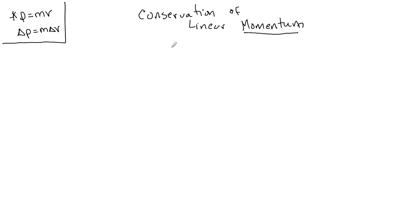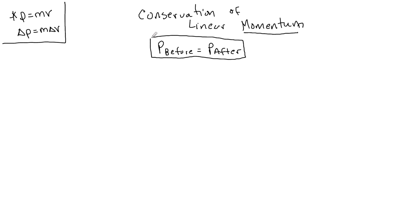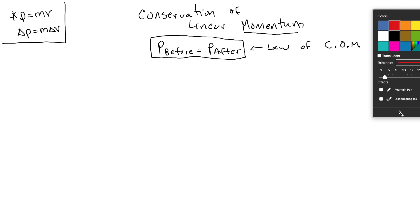Just like in energy, we know that momentum before is equal to momentum after, and this is in an isolated system where nothing is happening from the outside. We say p before equals p after, and this is the law of conservation of momentum. We're going to see that this extrapolates into a much bigger formula, but this is the basics, and we use this most commonly in collisions.